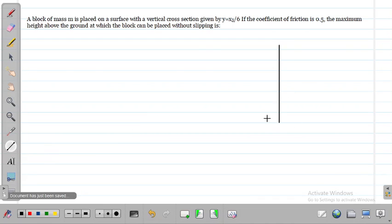So y equals x cubed by 6, which means when x is 0, y is 0; when x is 1, y is 1/6; when x is 2, y is 8/6. So the graph looks like this, or like this.